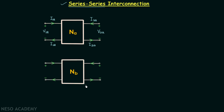Now let us take our second two-port network, which I will call NB. The input voltage of this network is V1B and the output voltage is V2B. The input current is I1B, and the same current will leave the network. The output current is I2B, and the same current will leave the network.